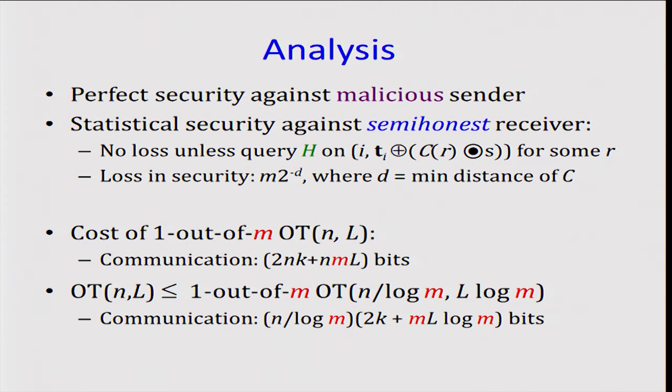The loss in security will be M, which is the number of codewords, times two to the negative D, where D is the minimum distance of the linear code C.